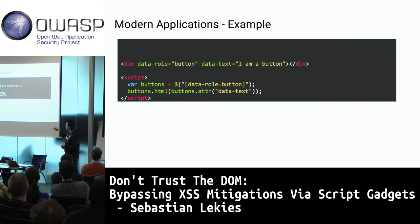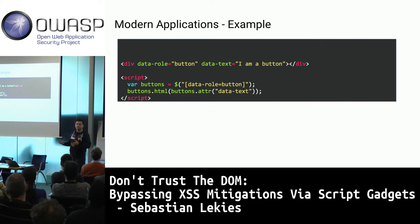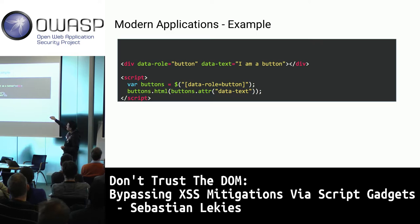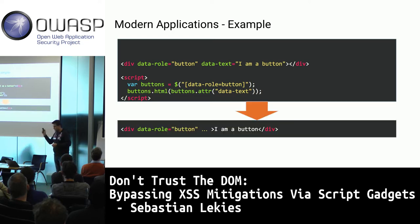In this stripped-down case, we mark that the element is a button and give it a data-text attribute — the text to be rendered on the button. The script selects this button by its marker and renders the data-text attribute into the button. The code executes, the button gets rendered with the text displayed.